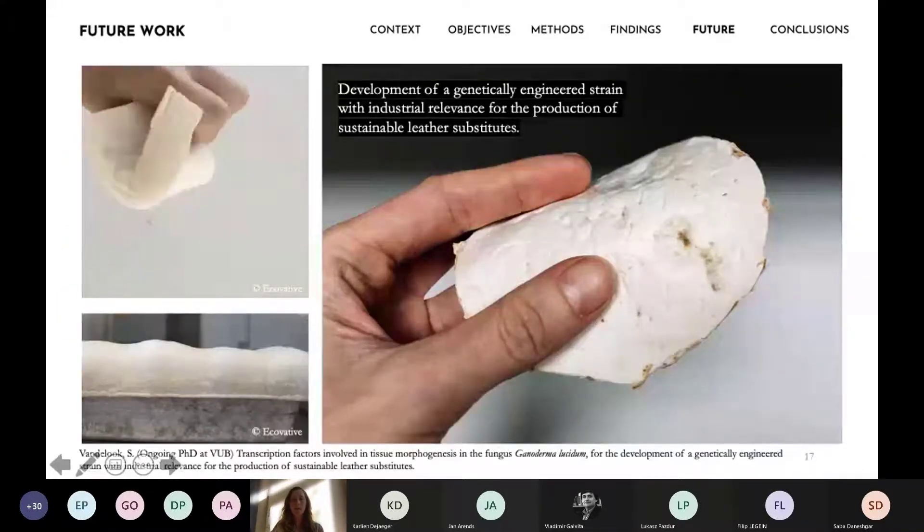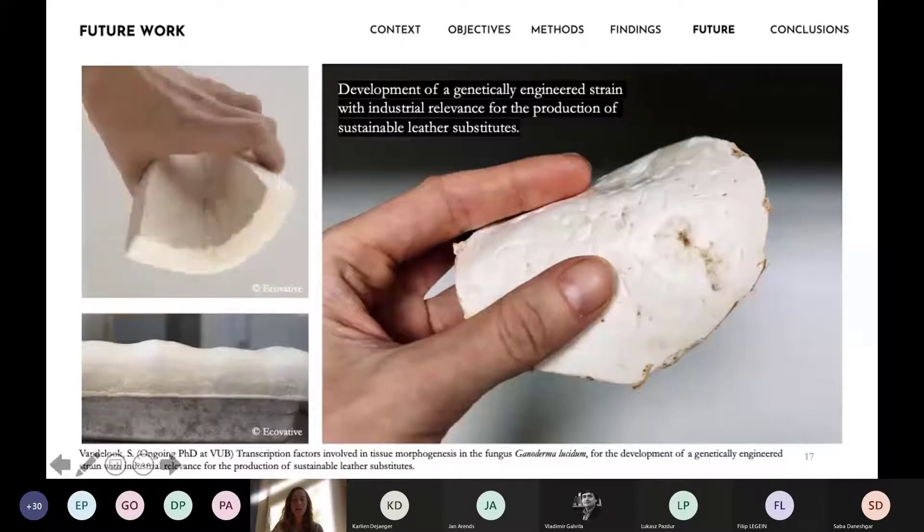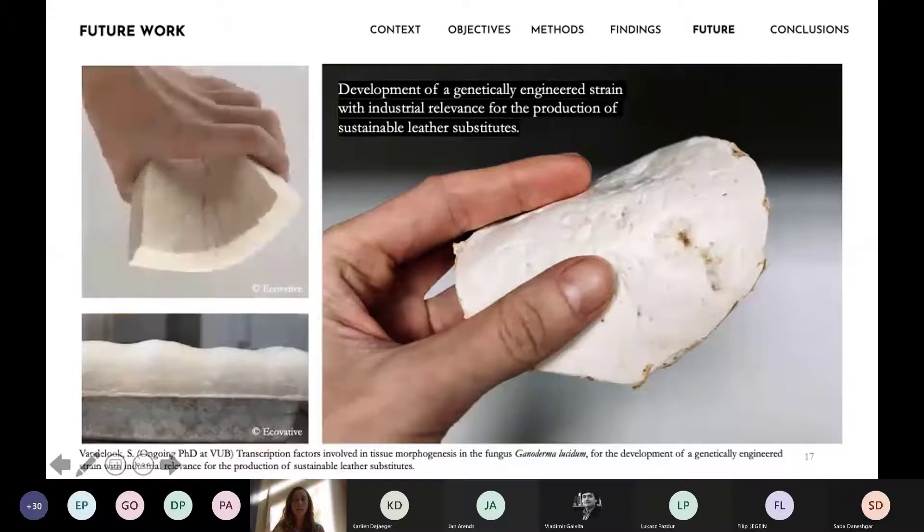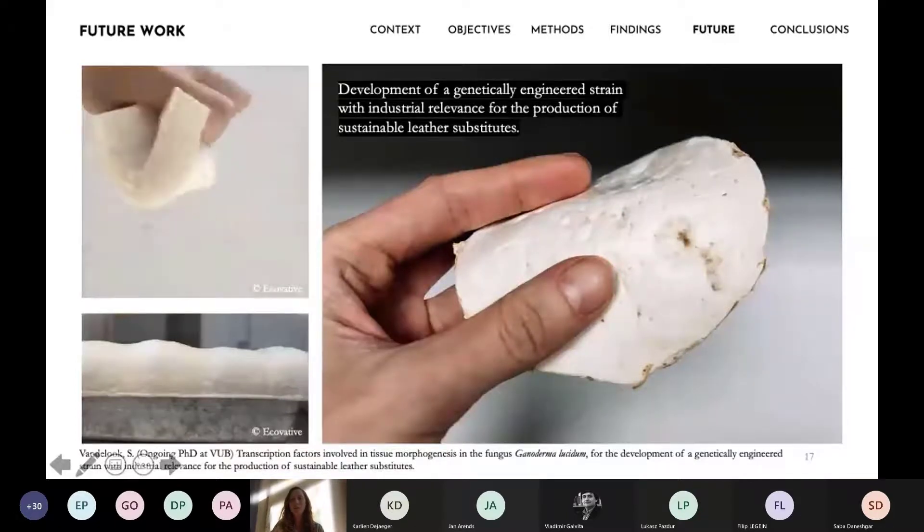The possibilities for future research with mycelium are really endless. We are just at the beginning of this investigation, but I want to highlight three parts of research that are currently ongoing in the VUB. The first one is the development of a genetically engineered strain, which is done with pure mycelium, and it could have an industrial relevance for the production of sustainable leather and plastic substitutes.